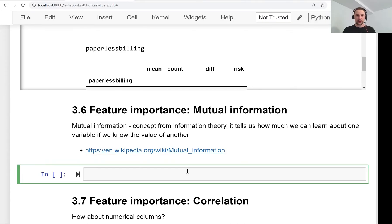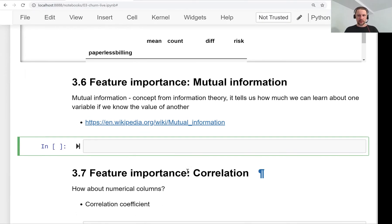We can use scikit-learn. Scikit-learn implements mutual information, so we don't need to implement this formula ourselves. We can just import it from scikit-learn, and it lives in the metrics package.